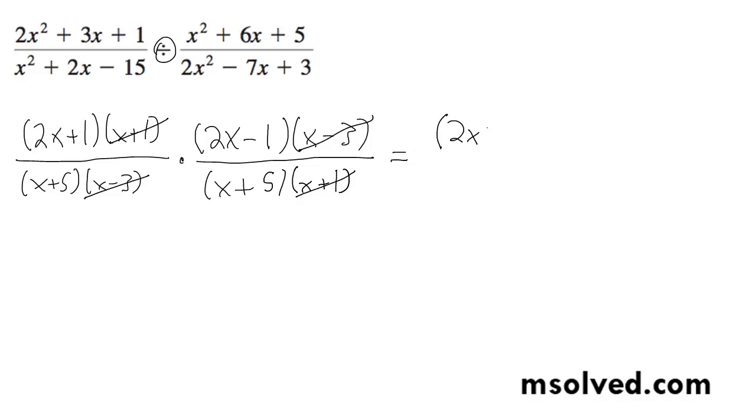So we're left with quantity 2x plus 1, quantity 2x minus 1 over x plus 5, x plus 5. And that's it, but you can simplify this further by doing difference of squares, 4x squared minus 1 over quantity x plus 5 raised to the second. That's it.